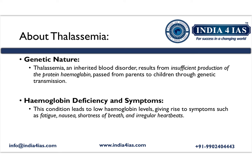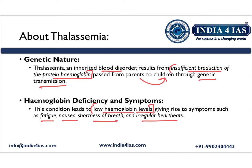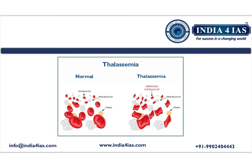Moving on to thalassemia disorder — it is an inherited blood disorder resulting from insufficient production of the protein hemoglobin. It is passed from parents to children through genetic transmission. This condition leads to low hemoglobin levels, giving symptoms such as fatigue, nausea, shortness of breath, and irregular heartbeat. In a person with thalassemia, the red blood cells are malformed, as seen in the following figure comparing normal and thalassemia-affected cells.